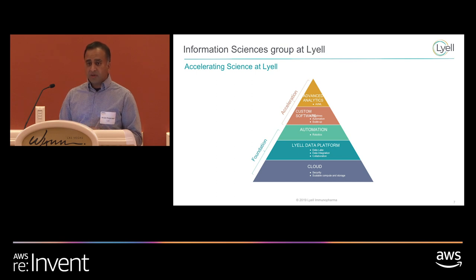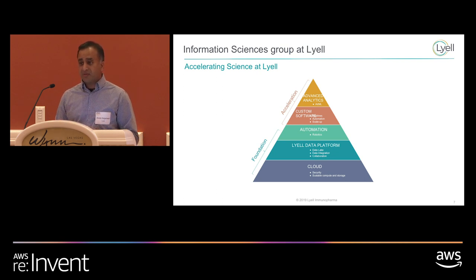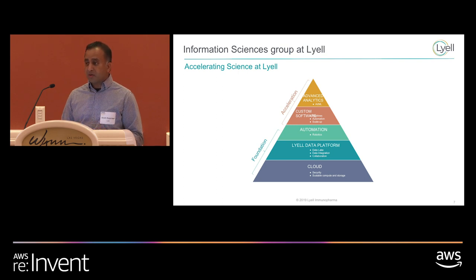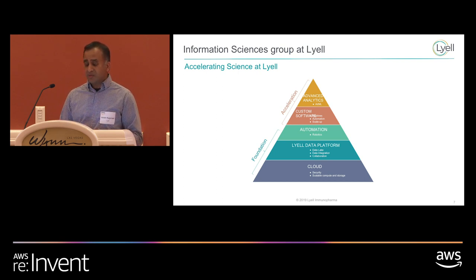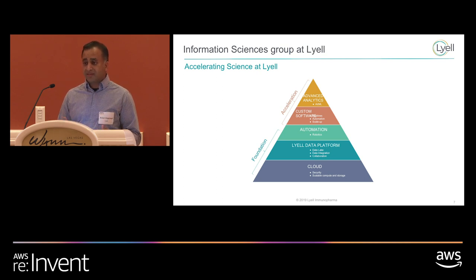As part of our group, we have people focused on robotics automation — people who can use robotics in the labs so that we can have higher throughput experiments and collect data more easily off instruments. We're also looking at software as a way to automate things, as well as custom software solutions for capturing and analyzing that data. And we have people using advanced analytics such as AI and ML to further interrogate this data.